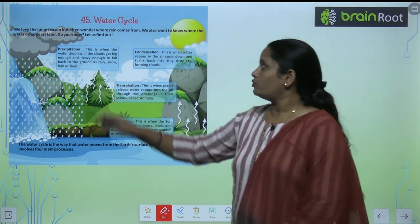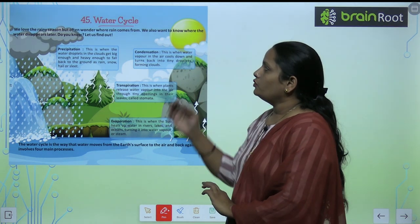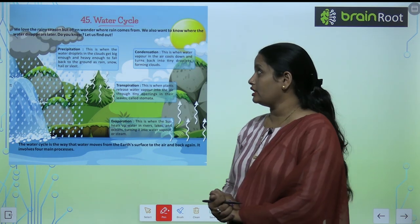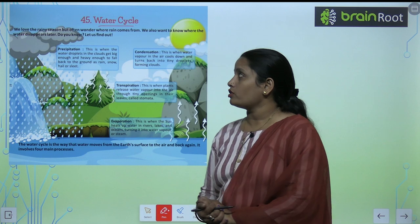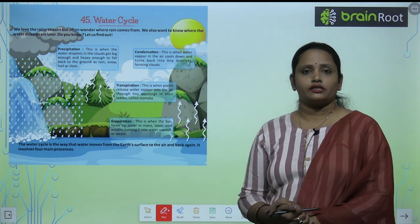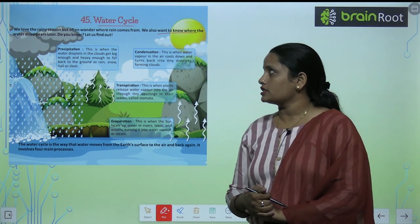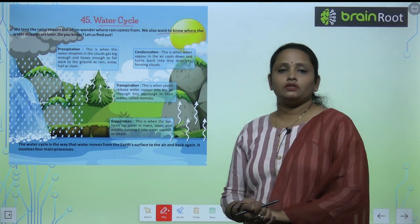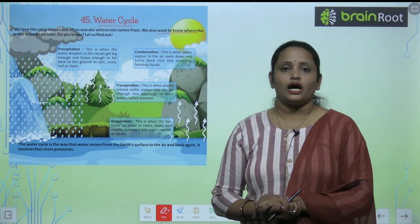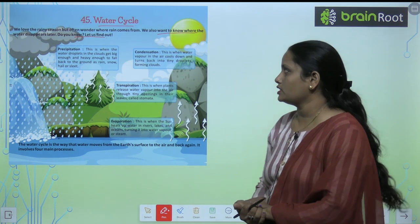Children, this is chapter number 45 and the name of the chapter is Water Cycle. We love the rainy season but often wonder why rain comes, where rain comes from. We want to know where the water disperses and disappears, and where the water comes from in the amount of rain. Let's find out.